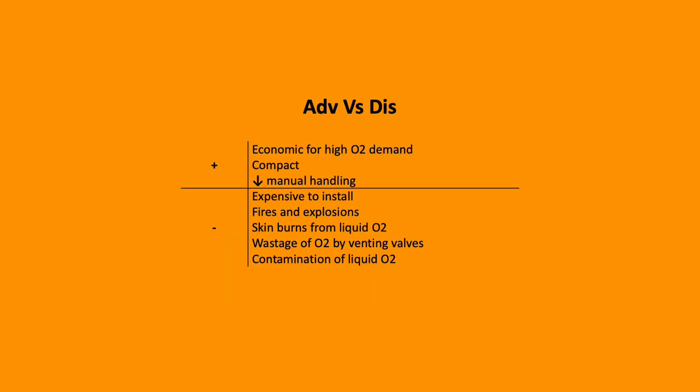Advantages and disadvantages of VIE. They're expensive to install, risk of fires and explosions, skin burns from liquid oxygen, wastage of oxygen by venting valves and contamination of liquid oxygen. However, they're economic for large institutions and in comparison to their cylinder counterparts, they're compact and require reduced manual handling.